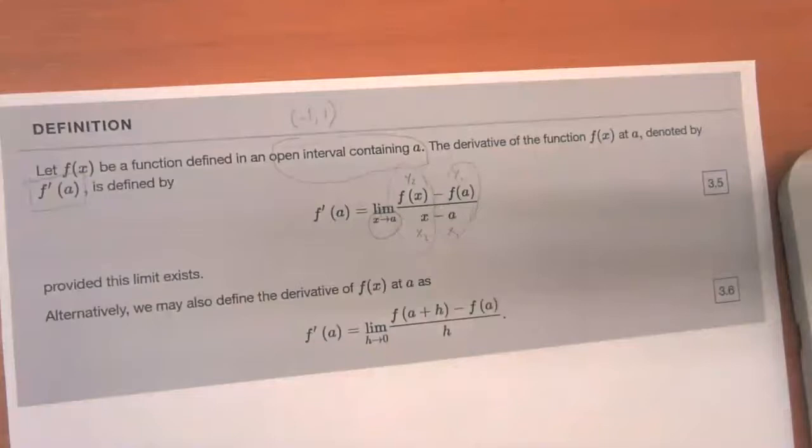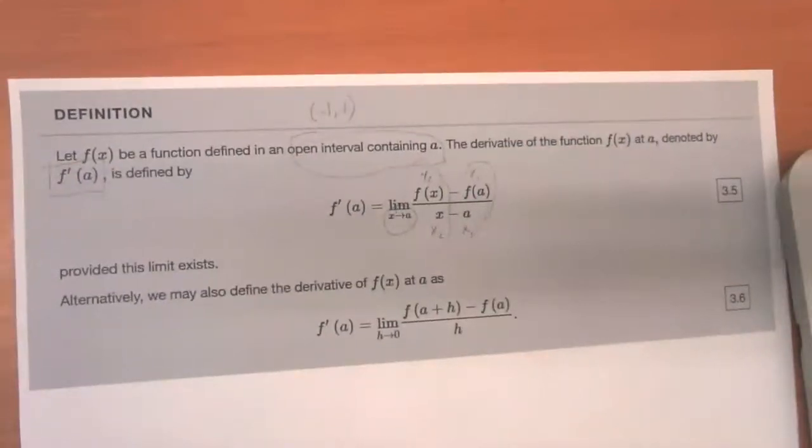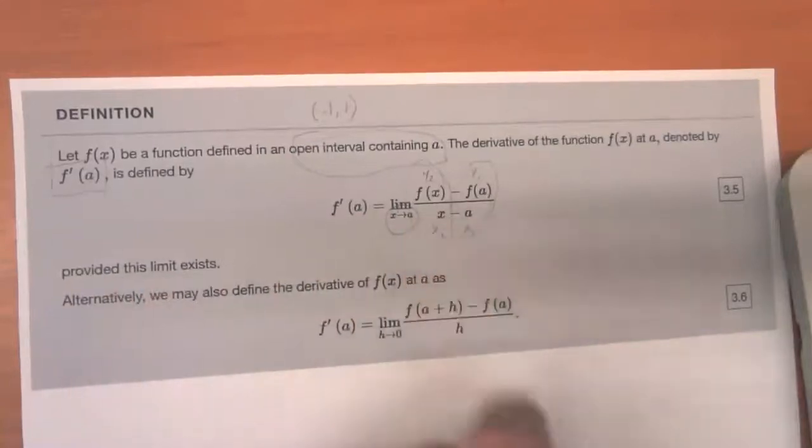So that's the definition of the derivative. So you can see that it's got a ton to do with slope. It's got this instantaneous rate of change connection provided the limit exists. If the limit doesn't exist, we'll talk about some examples of that in future videos. But if that limit doesn't exist, then there is no derivative at A.